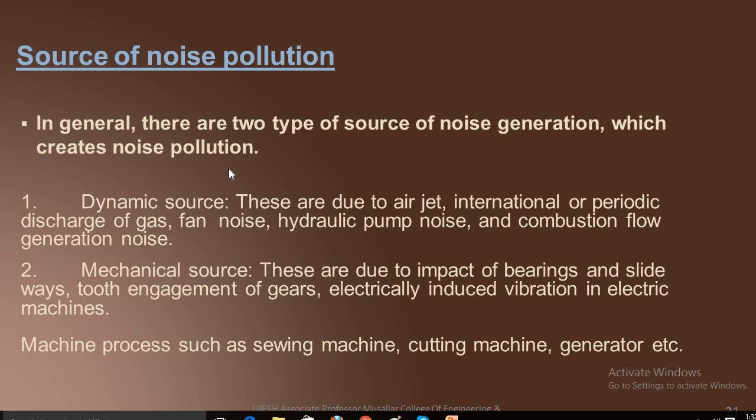The sources of noise pollution — there are two types: dynamic sources and mechanical sources. Dynamic sources include air jet discharge, periodic discharge of gas, fan noise, hydraulic pump noise, and combustion flow generation noise. Mechanical sources are due to impact of bearings and slide ways, tooth engagement of gears, electrically induced vibration, and machine processes such as sieving machines, cutting machines, and generators.